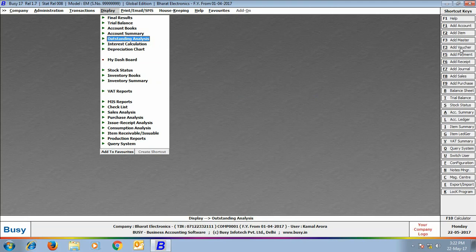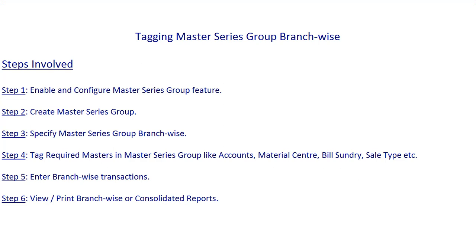Till now we have seen the tagging of Master Series Group user-wise. Now we will tag Master Series Group branch-wise. If your company has different branches, you can create a separate Master Series Group for each branch. The steps are: Step 1 — Enable and Configure Master Series Group; Step 2 — Create Master Series Group; Step 3 — Specify Master Series Group branch-wise; Step 4 — Tag required masters like Account Master, Material Center, Bill Sundry, Sale Type Master.